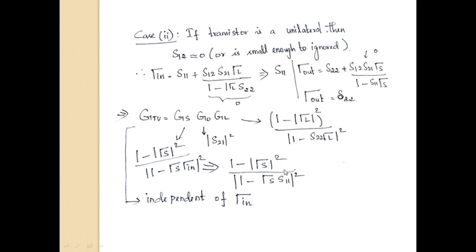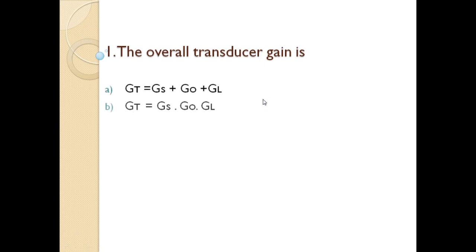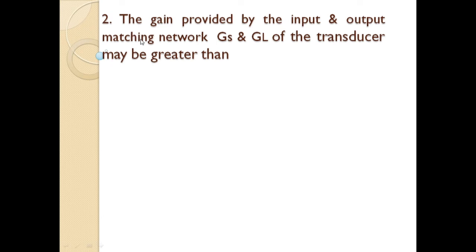Now for MCQ questions. Question 1: The overall transducer gain is — option A: GT = GS + G0 + GL; option B: GT = GS × G0 × GL; option C: GT = GS − G0 − GL; option D: GT = 0. The answer is option B: GT = GS × G0 × GL.